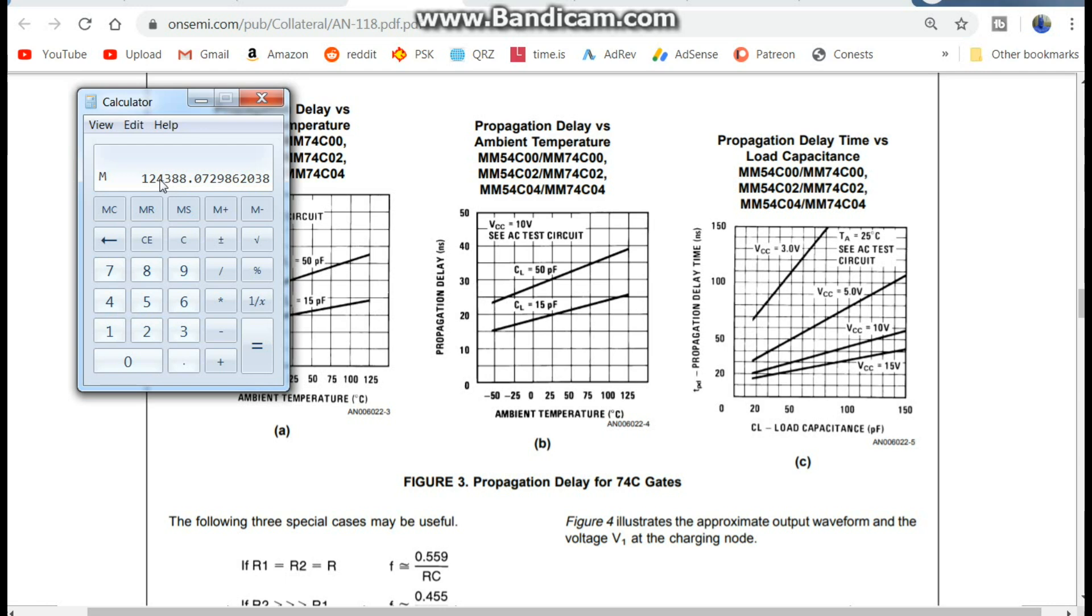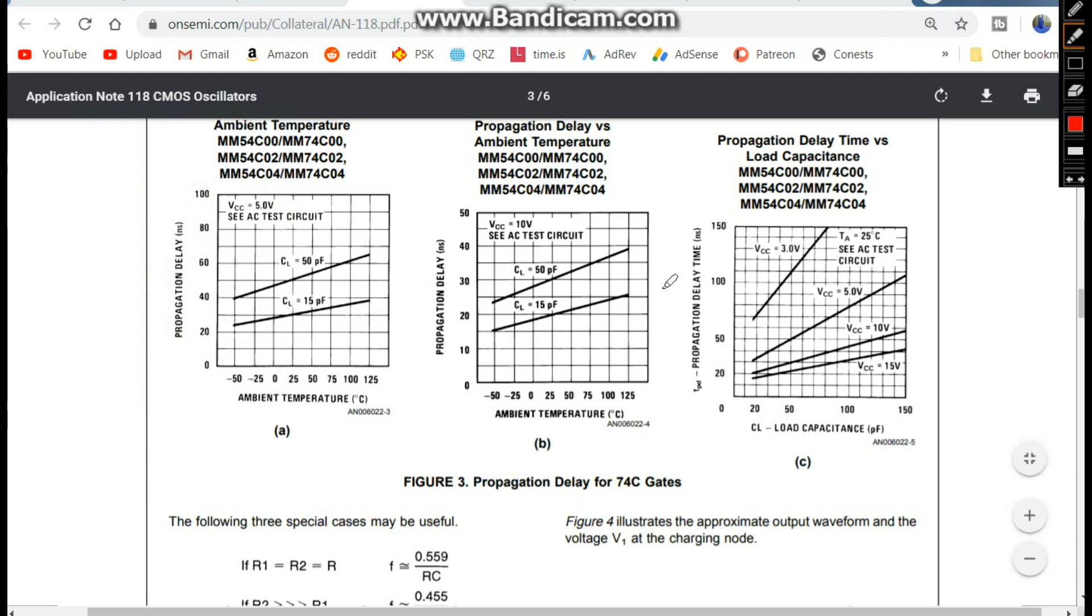124,388 and we got what was our 148 kilohertz. They're saying 124 kilohertz. So we're, you know, 24 kilohertz off, but are my resistors actually 1K? I don't know. We'd have to find out. But that's close enough in the ballpark that we know this formula right here, if you're using two resistors of the same value, the formula is true. So we're good there.